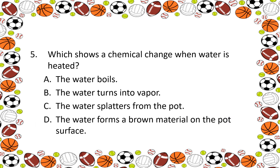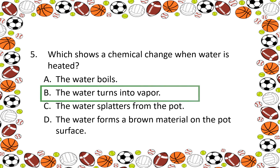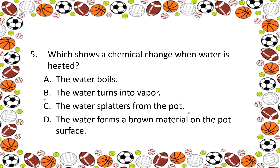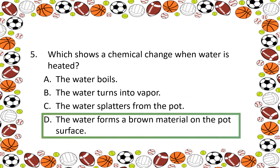Number 5: Which shows a chemical change when water is heated? A. The water boils. B. The water turns into vapor. C. The water splatters from the pot. D. The water forms a brown material on the pot's surface.